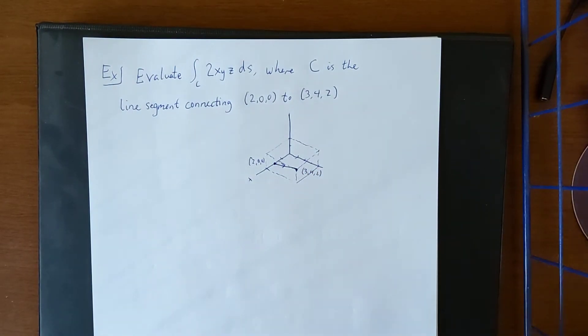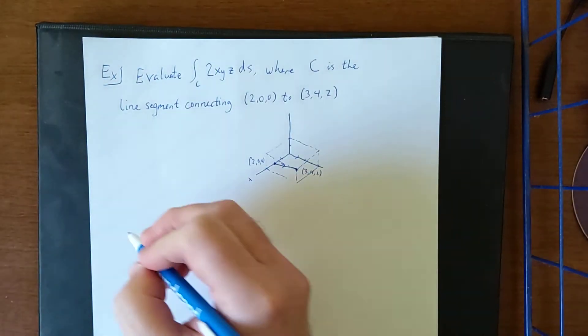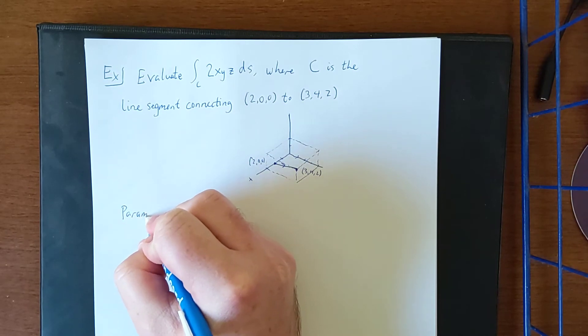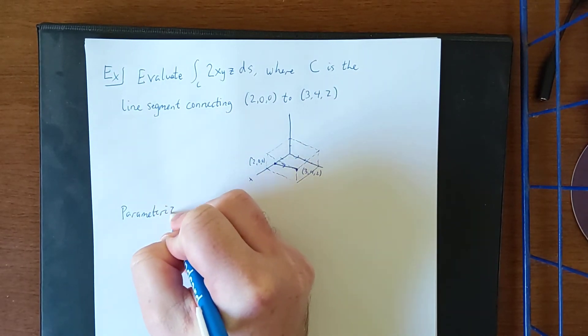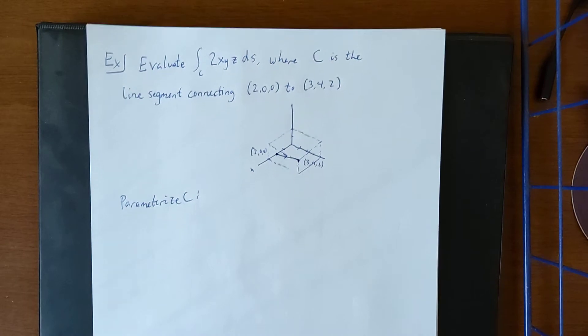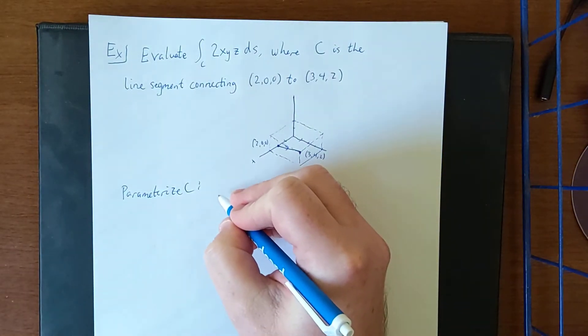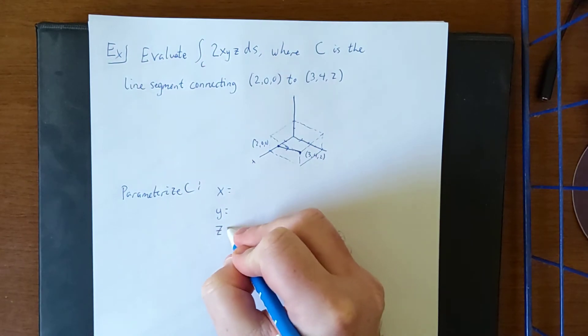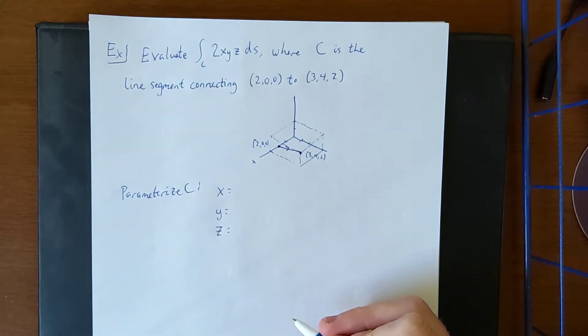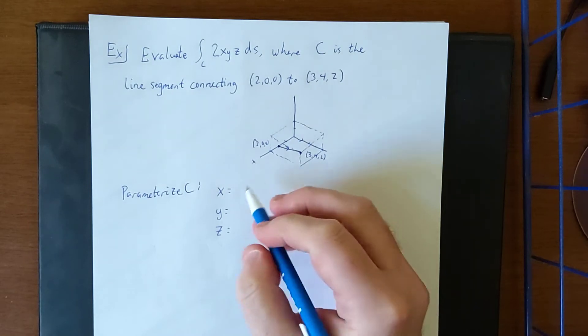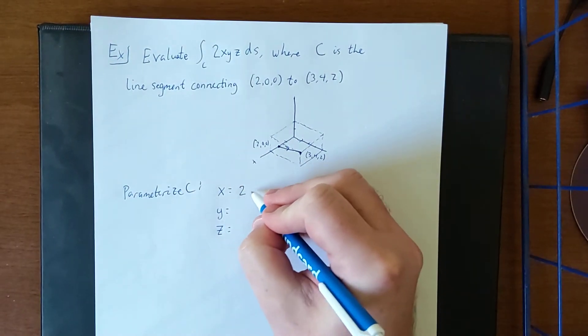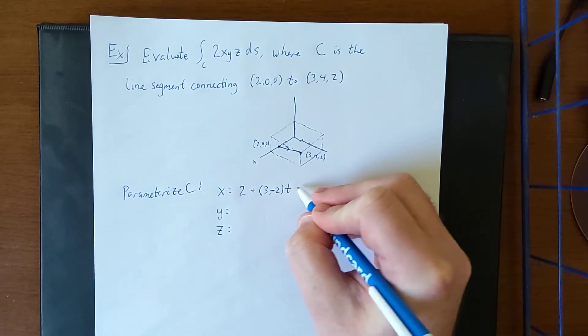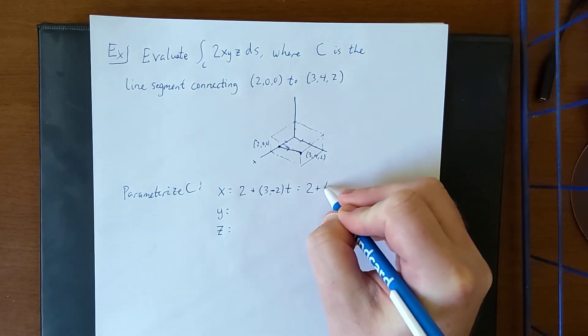Now as we did with line integrals in two dimensions, first thing we're going to do is parameterize C. Because it's a line segment, we could do the same as in two dimensions and take starting point plus change in the variable times t. So for x, our starting point is 2. The change in the variable is 3 minus 2 times t. So this will be simply 2 plus t.